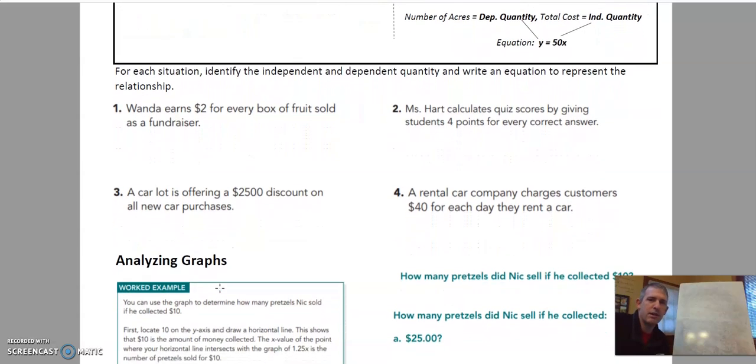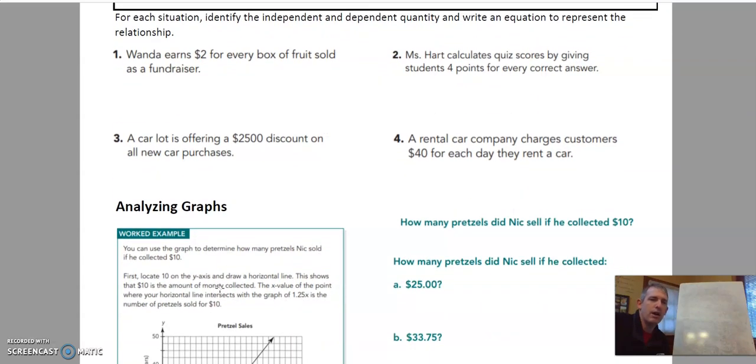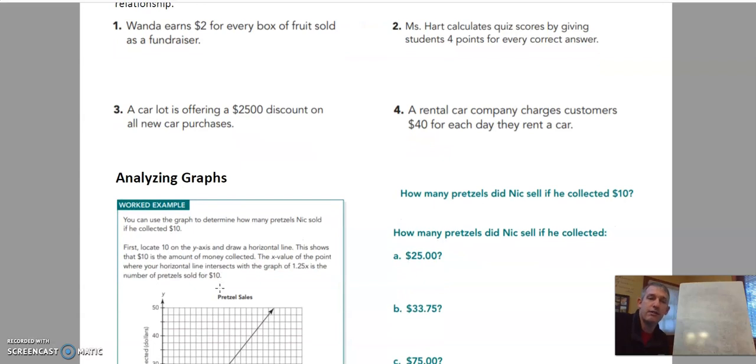Rate situation. Identify the independent and dependent quantity and write an equation to represent the relationship. Wanda earns $2 for every box of fruit sold as a fundraiser. Let's see. Wanda earns $2 for every box of fruit sold at the fundraiser. Well, the number of boxes is something that's changing. I completely forgot that. Remember, we're going to look for the two things that are changing.